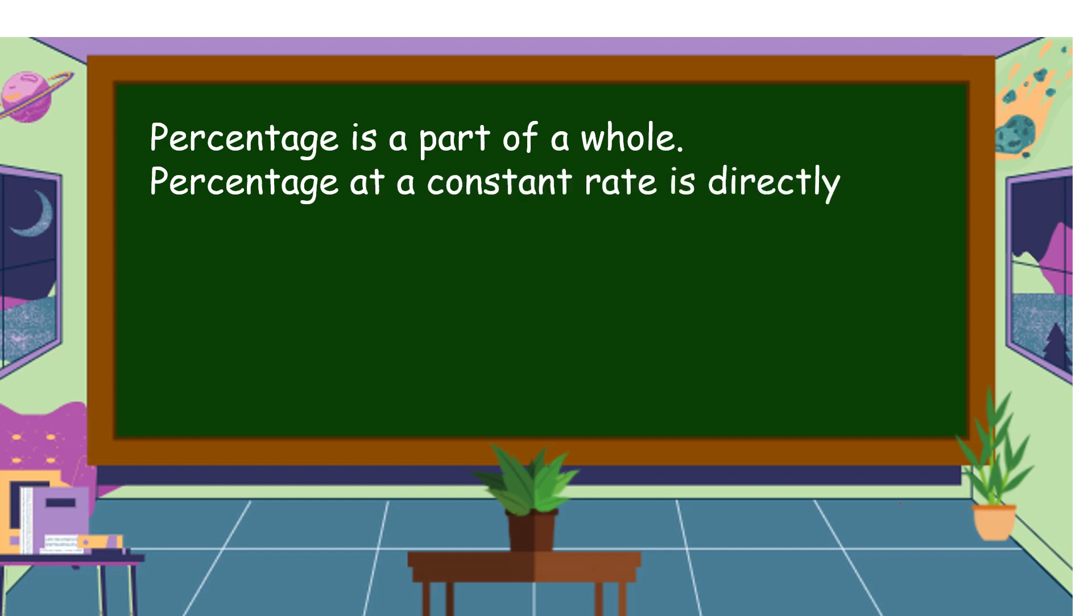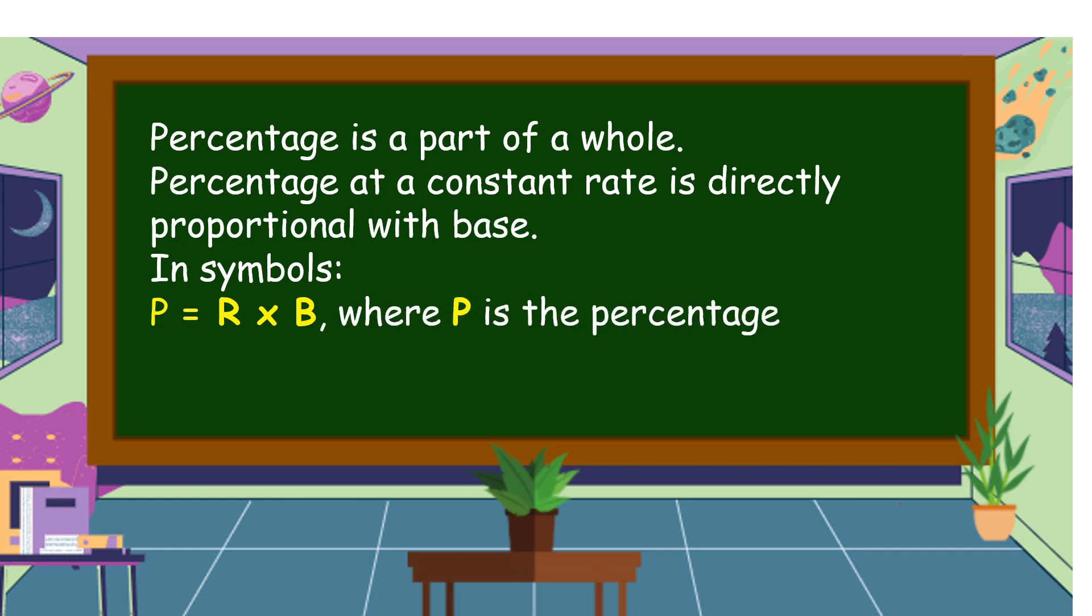What is a percentage? Percentage is a part of a whole. Percentage at a constant rate is directly proportional with base. In symbols, P is equal to R times B, where P is the percentage, R is the rate or percent, and B is the base.